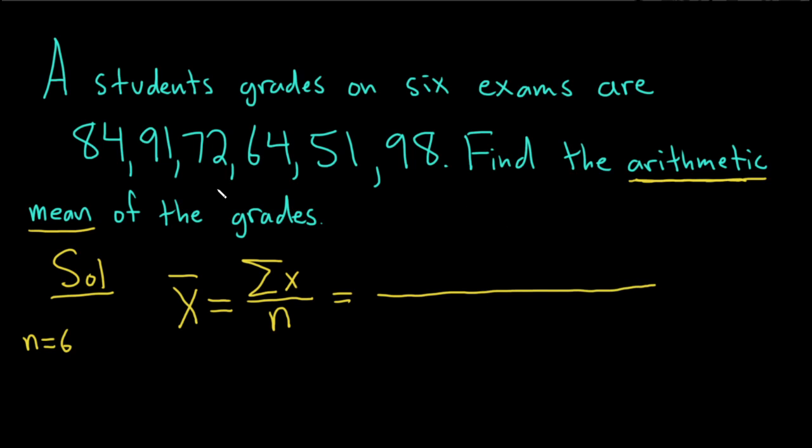And in the numerator, we basically just add up the numbers. That's what this means. This means that you add up all of these numbers. So we have 84 plus 91, plus 72, plus 64, plus 51, and then plus 98.